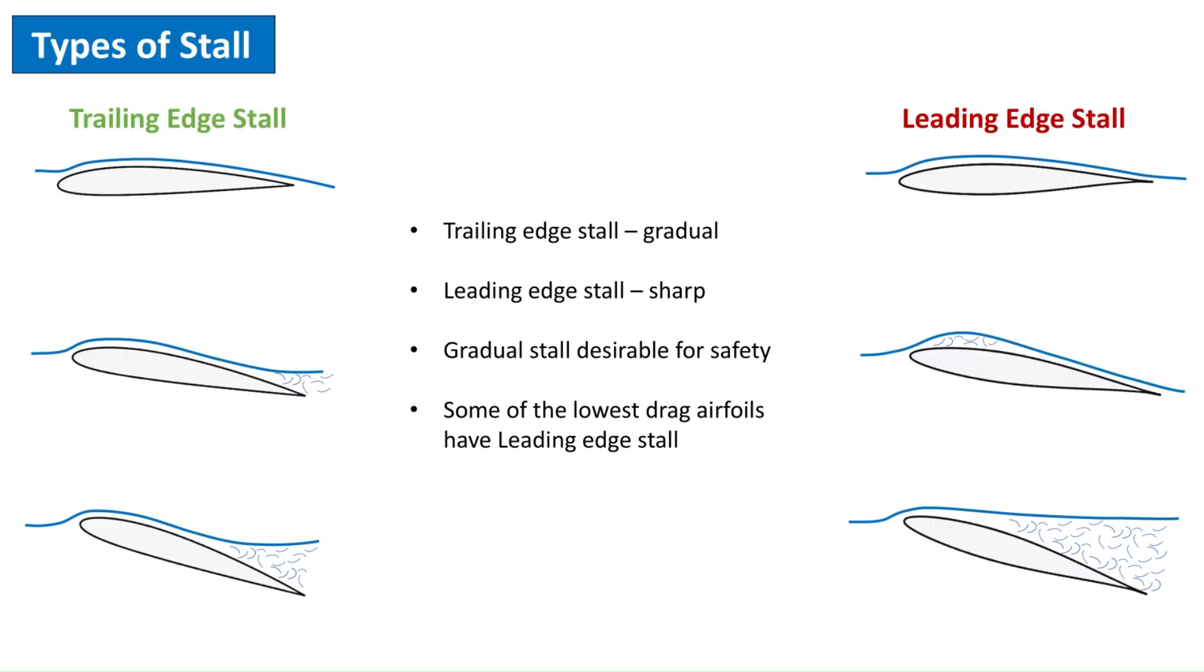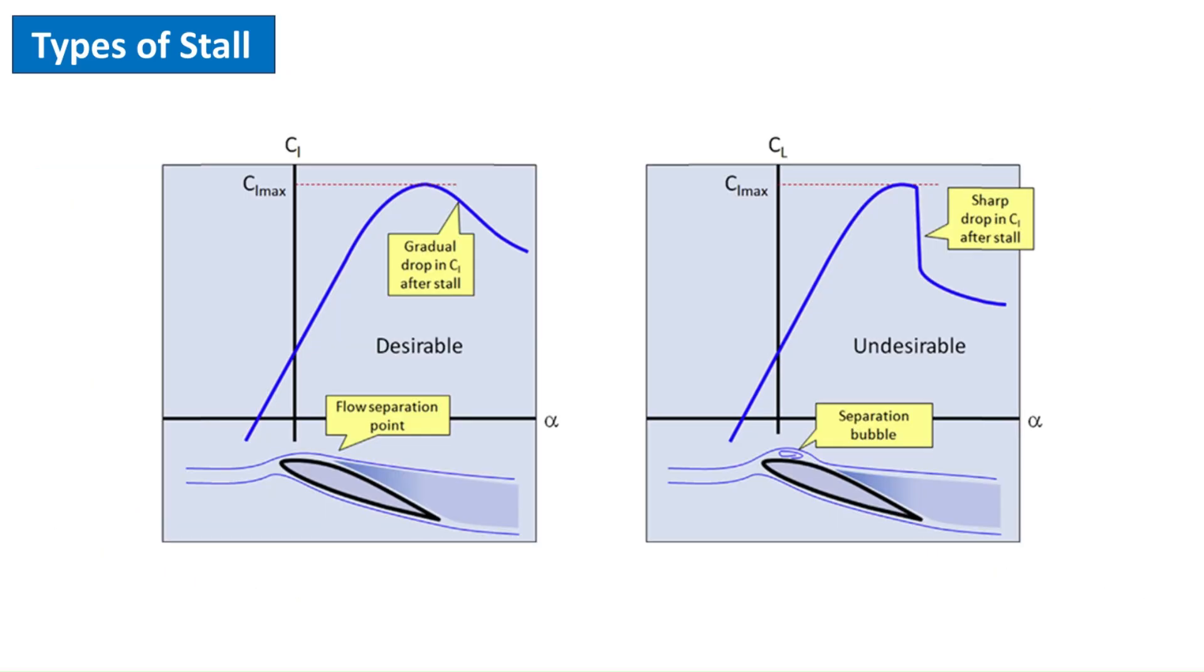As it can be seen, there is usually a compromise between low drag and gentle stall characteristics. If two airfoils, one with trailing edge and the other with leading edge type of stall have a similar performance, it would be better to use the one with the gentle stall behavior. Even a little performance could be compromised for safety.